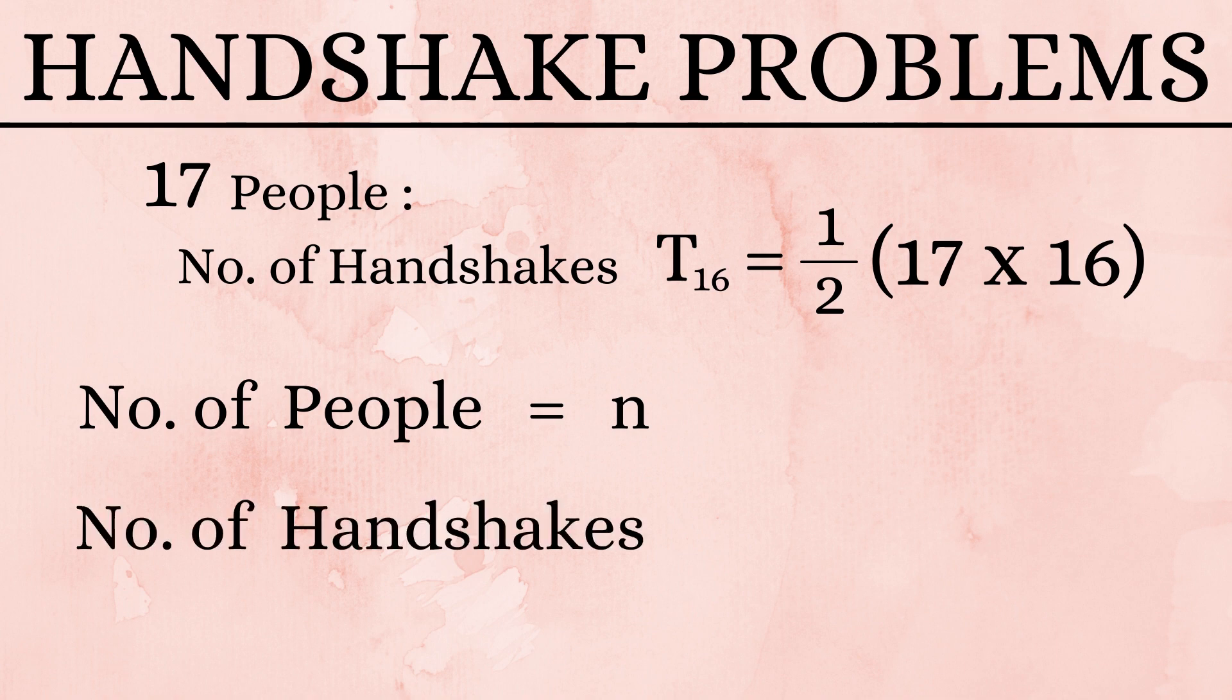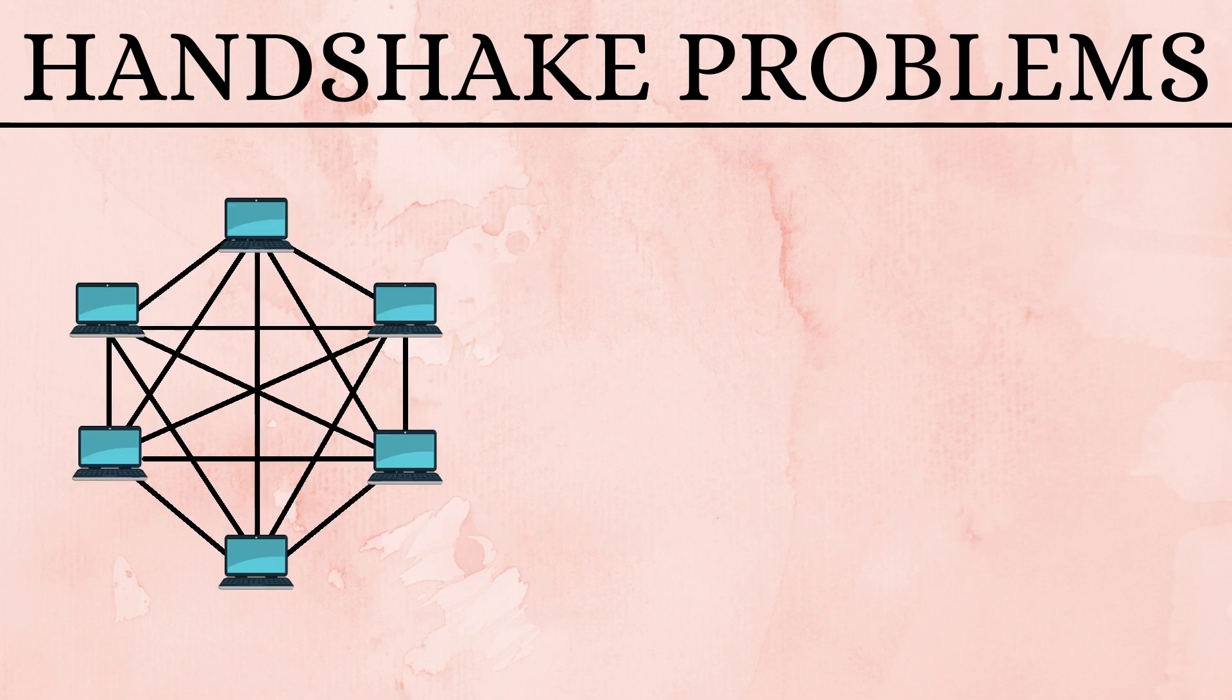In simple terms, for n number of people, the number of handshakes would be half of n into n-1.